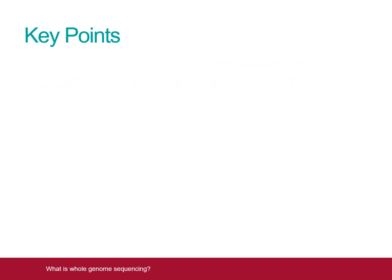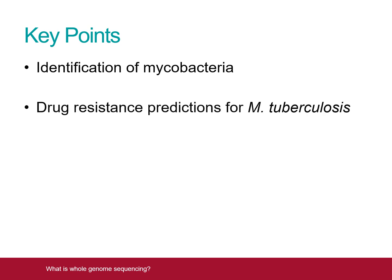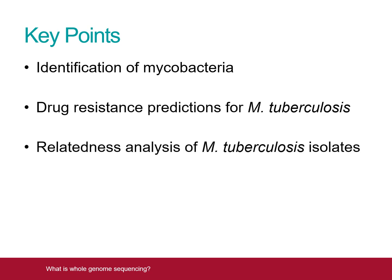In summary, the NMRS now uses WGS for identification of all Mycobacteria, as well as drug resistance prediction and relatedness analysis for Mycobacterium tuberculosis.